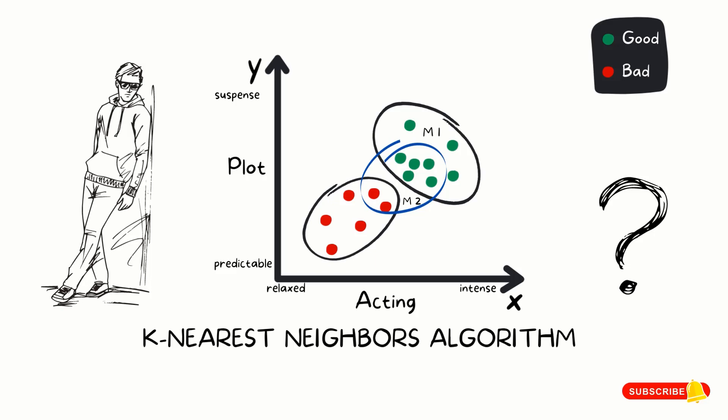What we just did seemed very easy because we had fewer choices. What happens when the choices become complicated, like classifying emails under spam or not? Machine learning learns the data based on the prediction model, and when a new data point comes in, it can easily predict or decide. The more data fed to the model, the better the model gets, and the higher the accuracy of the results.